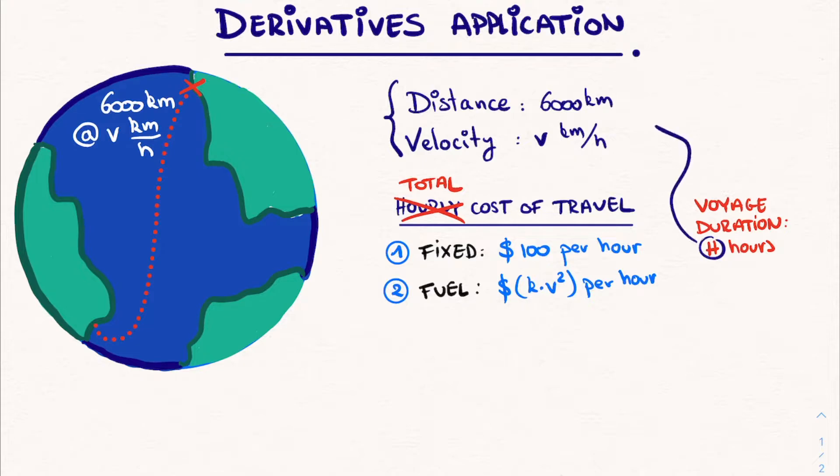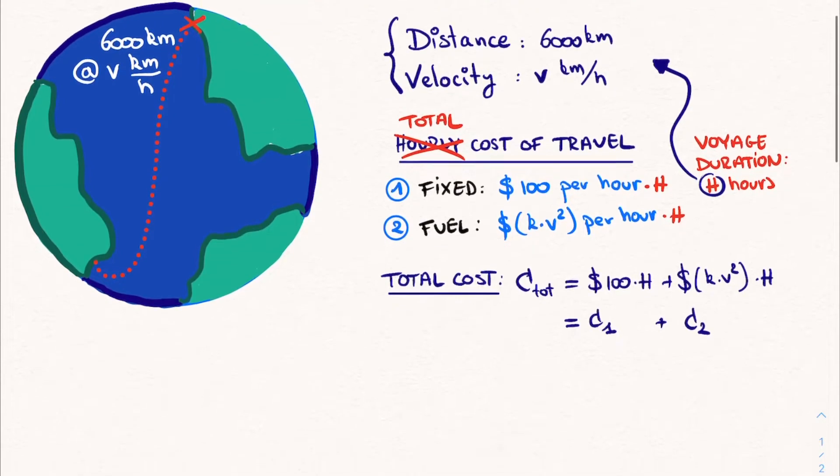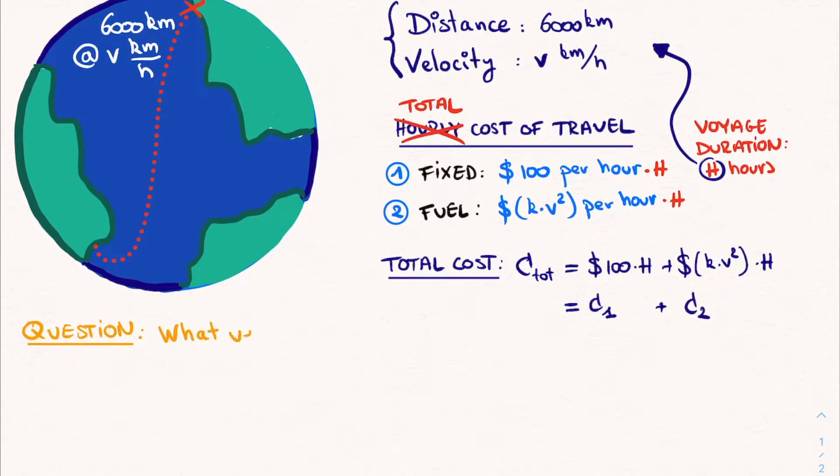And the total number of hours we call capital H. And it is clearly dependent on the distance that we traveled, in this case 6000 kilometers, and the velocity that we had over this distance. Knowing this, we can write down the total cost. C_total is equal to the fixed part, $100 times capital H, plus the fuel part, which is K times V squared dollars times capital H. And we can write the fixed part as C1, and the fuel part as C2. And this brings us to the central question that we're going to solve. Namely, with which velocity do we need to travel across the ocean, such that the total cost is minimized?